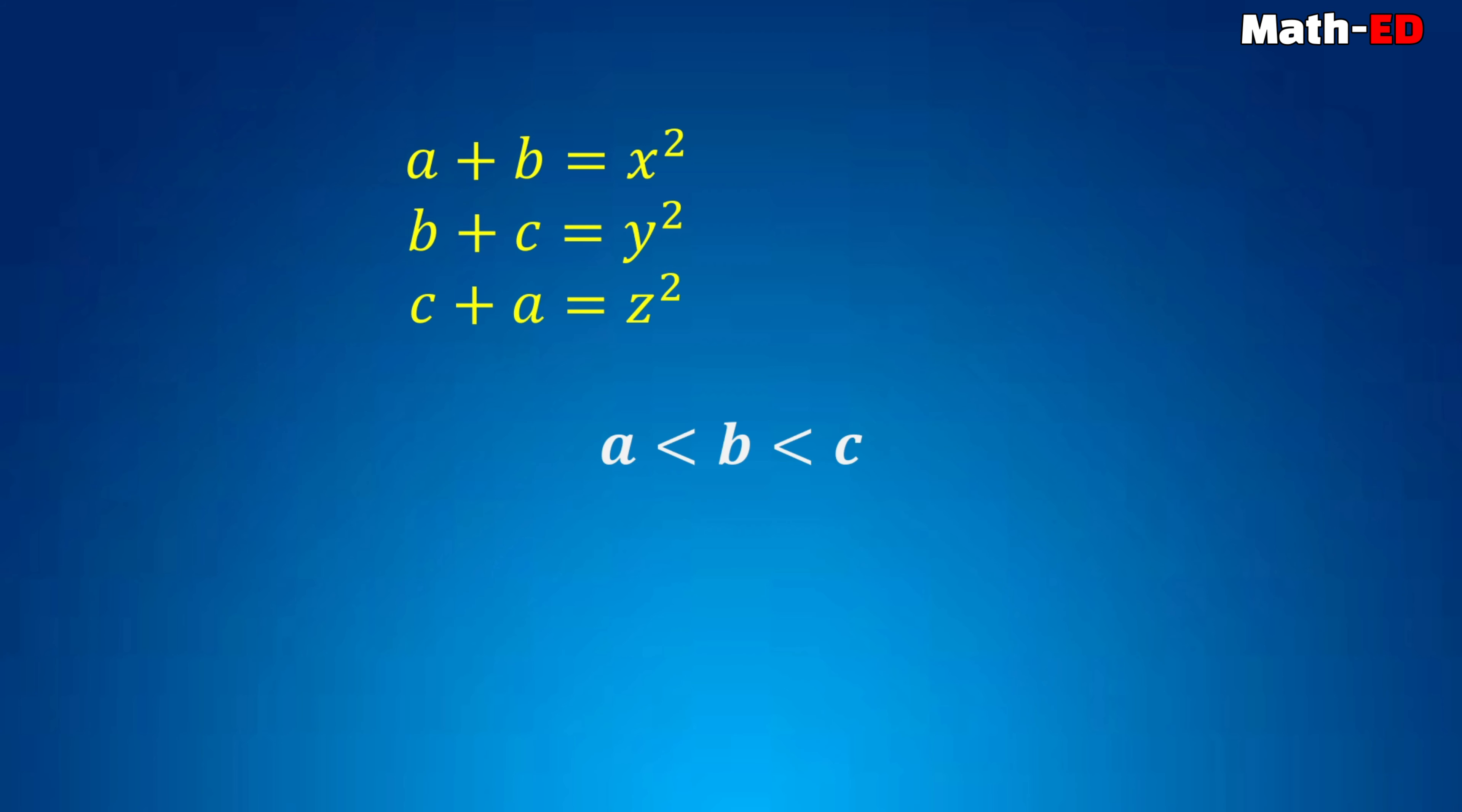Now we can write that a plus b equals 2k minus 1 whole square, b plus c equals 2k plus 1 whole square, and c plus a equals 2k whole square.